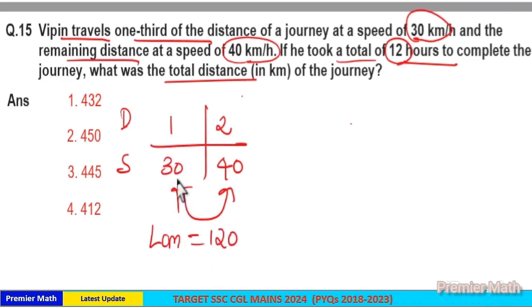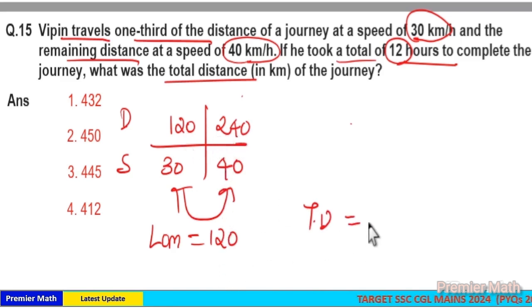So consider one part as 120. One part is equal to 120, then two parts is equal to 2 times 120, which is 240. So total distance from the LCM method is equal to 240 plus 120, which equals 360. So this is 360 parts and we have to find out what is one part.